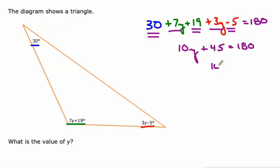Let's subtract 45 from both sides, so 10y would equal 180 minus 45, which is 135. Then we'll divide both sides by 10, and that would be 13.5.